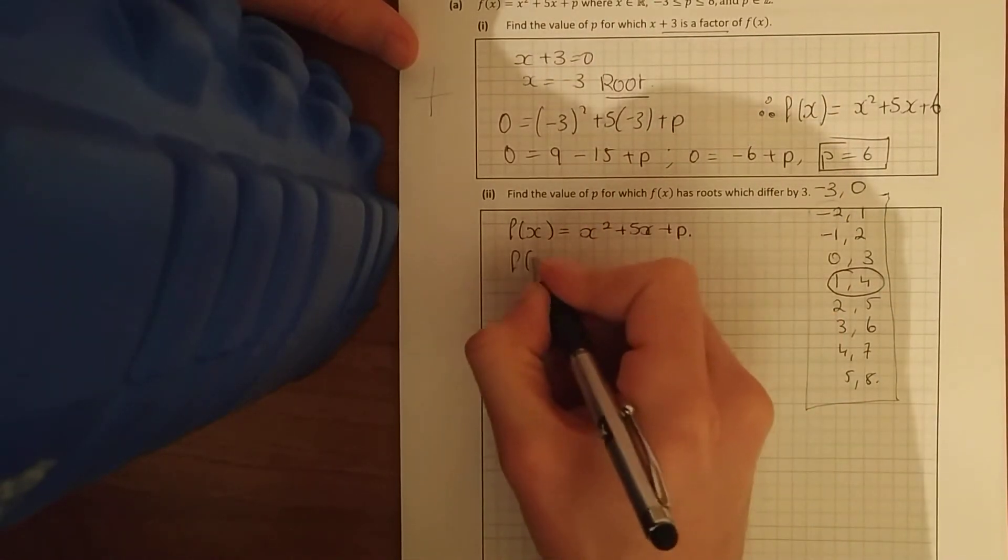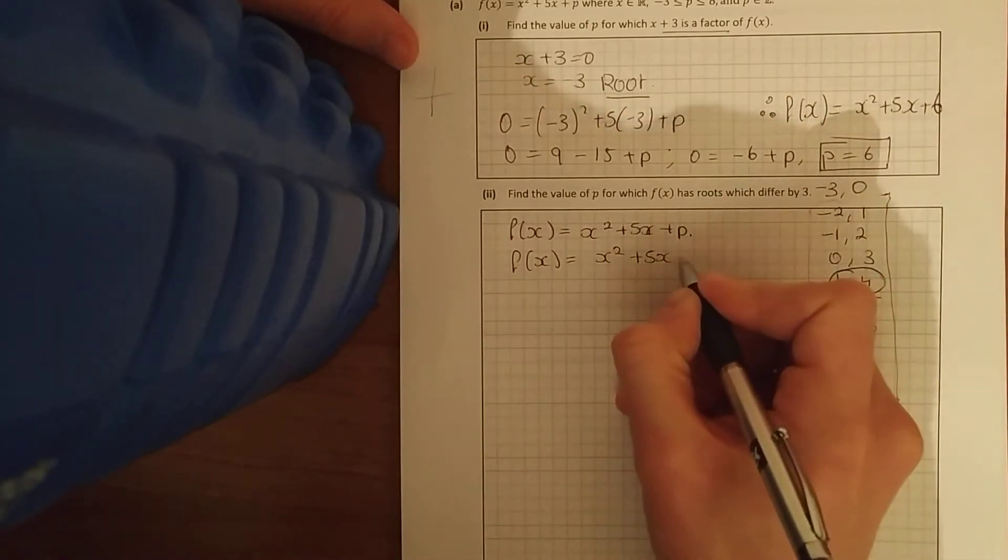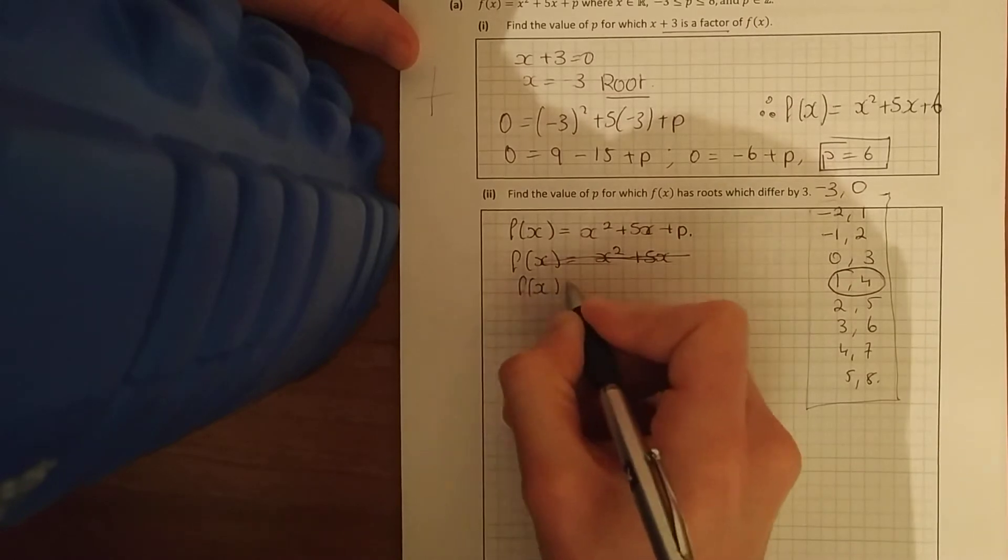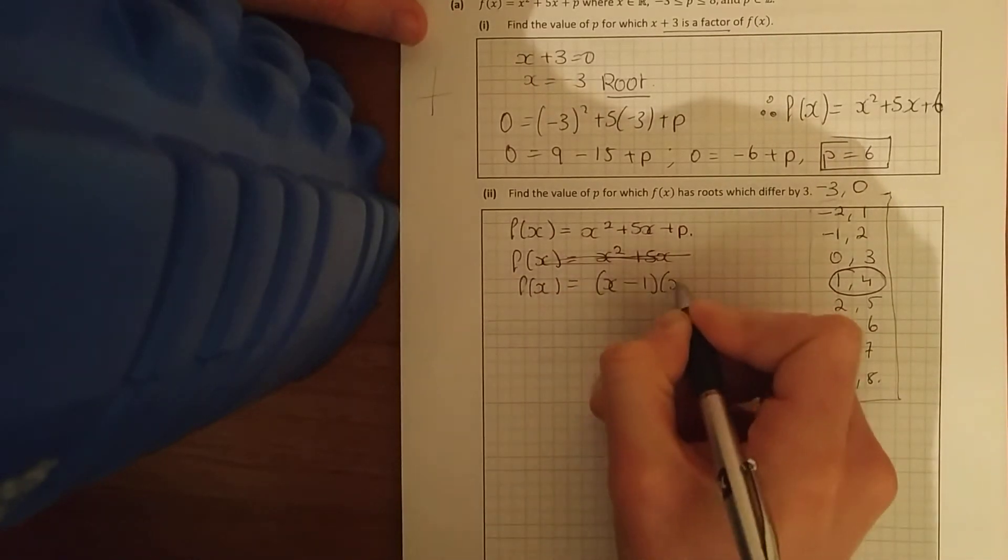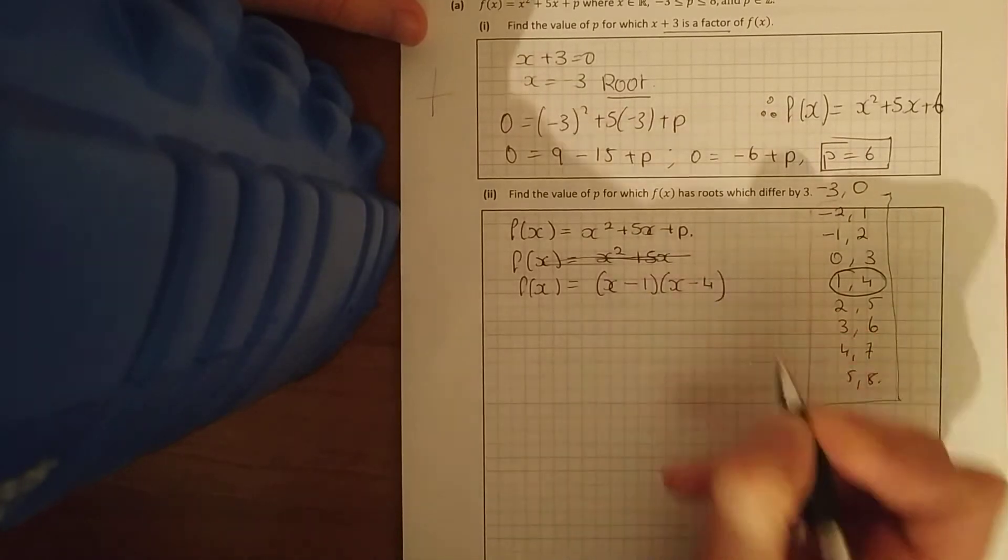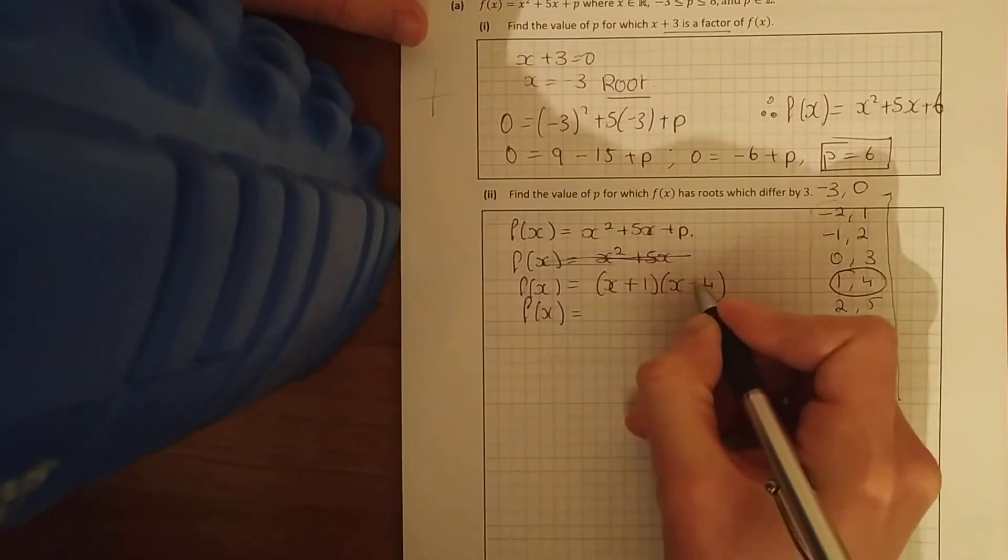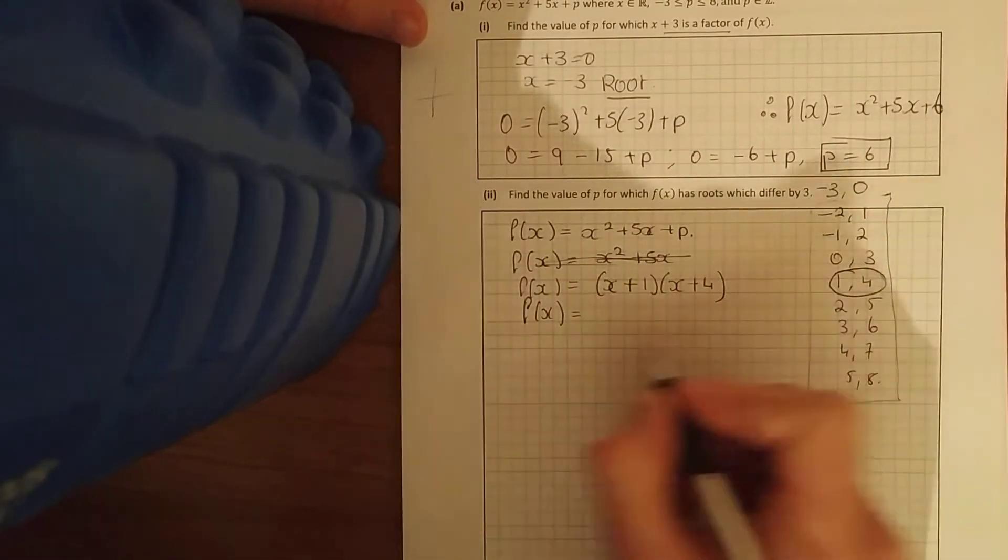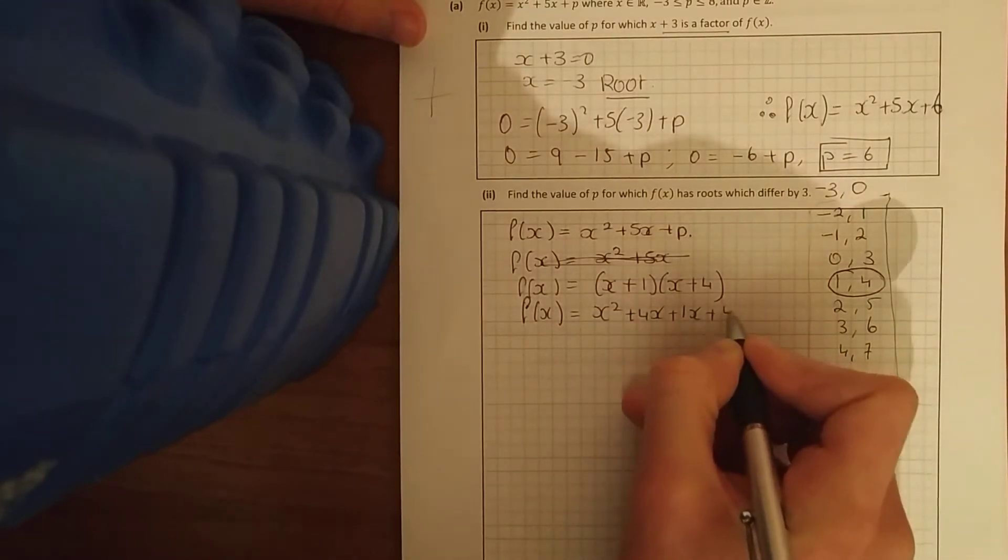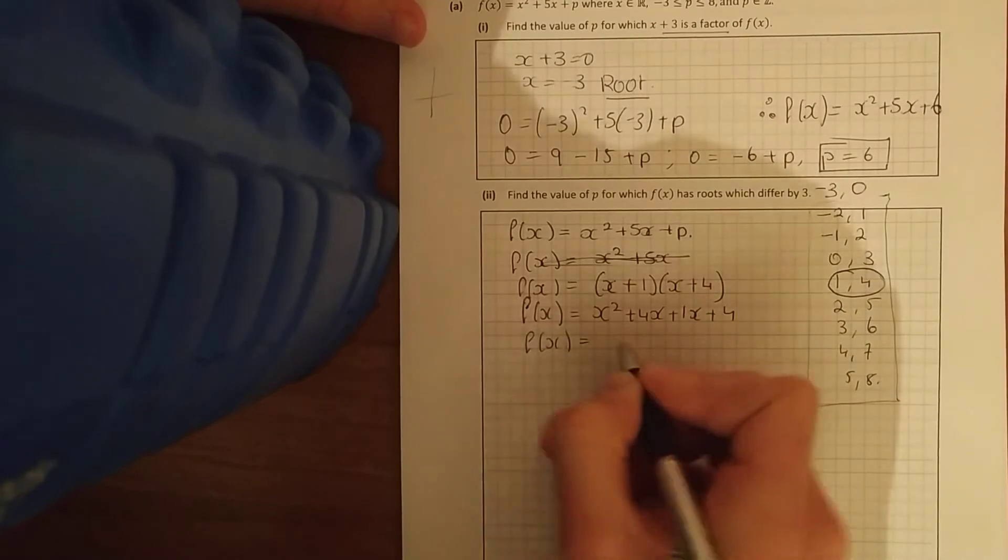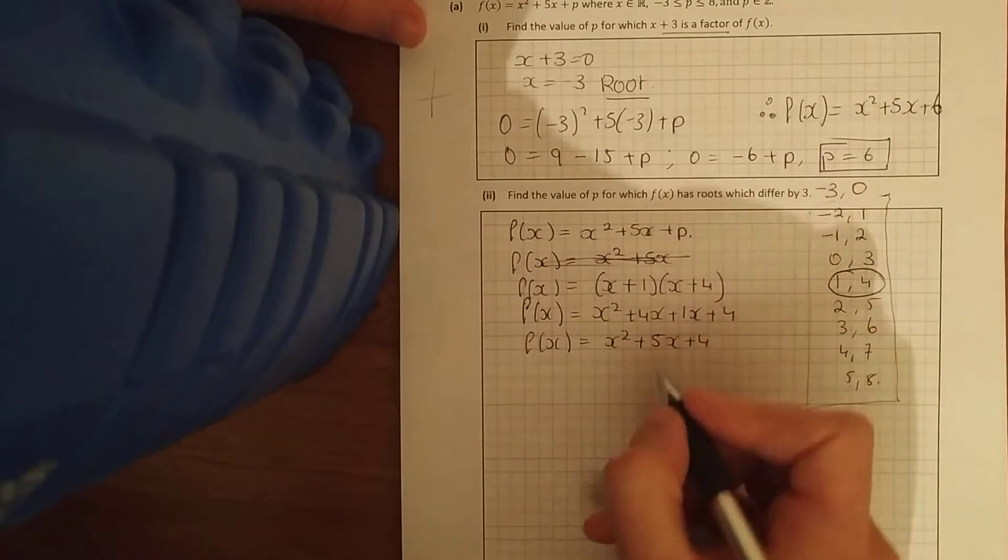If I'm skimming through those, the only way I can get a 5 out of those is that, and it's a plus 5. So that means that my quadratic will be f of x equals x minus 1 and x minus 4. Would that be right? Or x plus 1, x plus 4, sorry. So x squared plus 4x plus 1x plus 4, f of x equals x squared plus 5x plus 4.